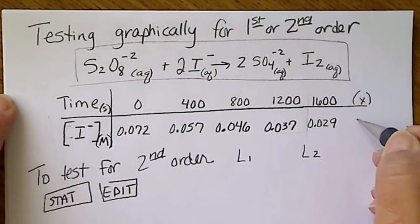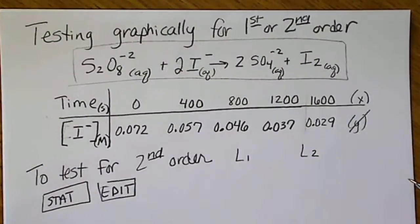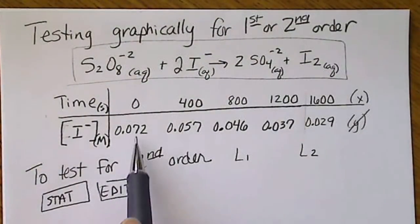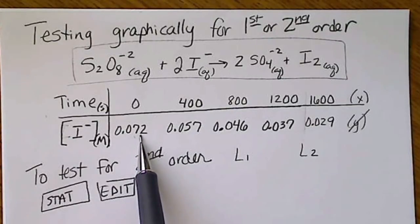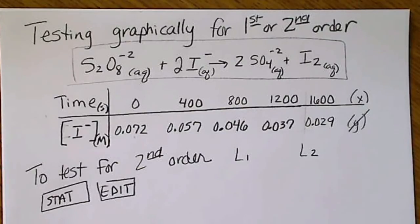We are not going to graph this as y, but if we're going to test for first or second-order, we're going to take this data and either graph it as the natural log or 1 over the data. Since I know what this reaction is going to be, I'm going to test for second-order initially.